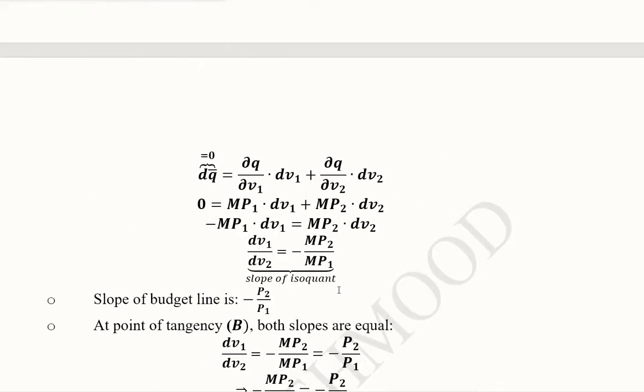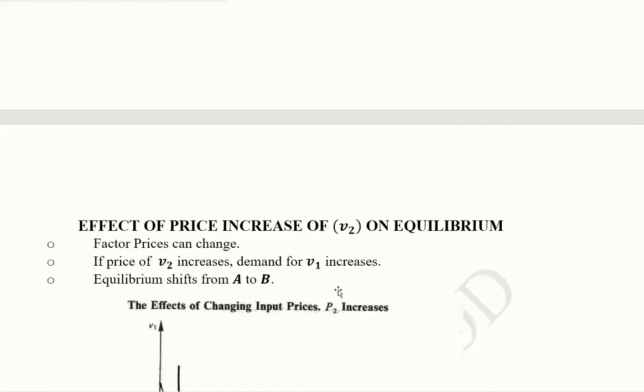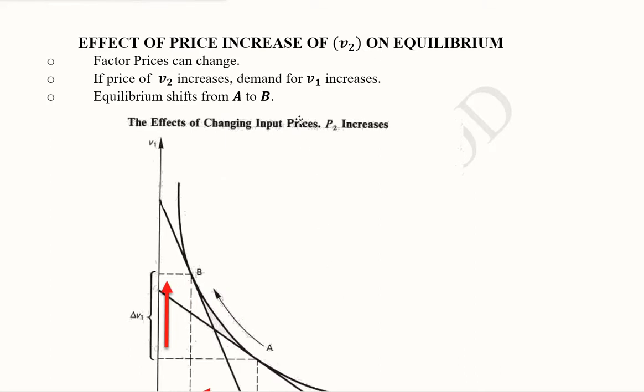After doing this, we can also try to achieve another small thing—to see the effect of the price change on the equilibrium. Here we are assuming that the price of the second input increases. Because increase in the factor prices is nothing exceptional, it can happen as all prices change in real life.